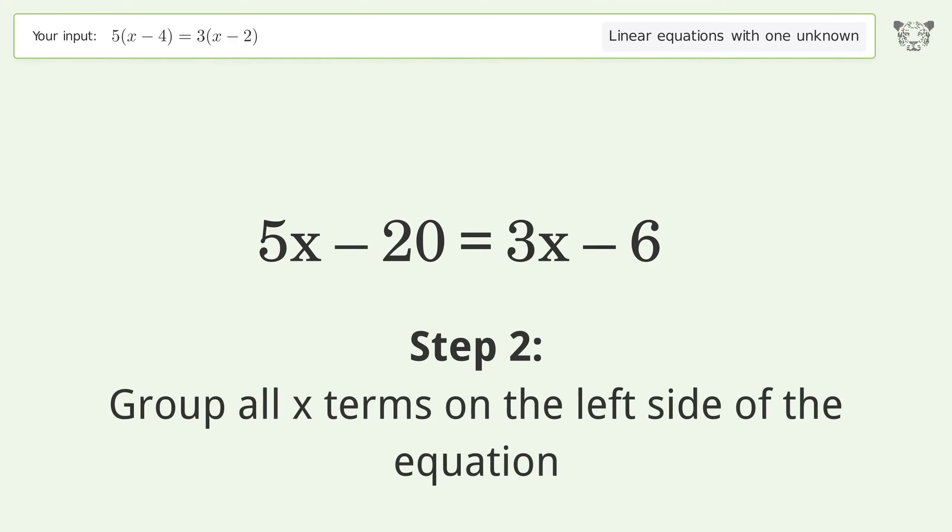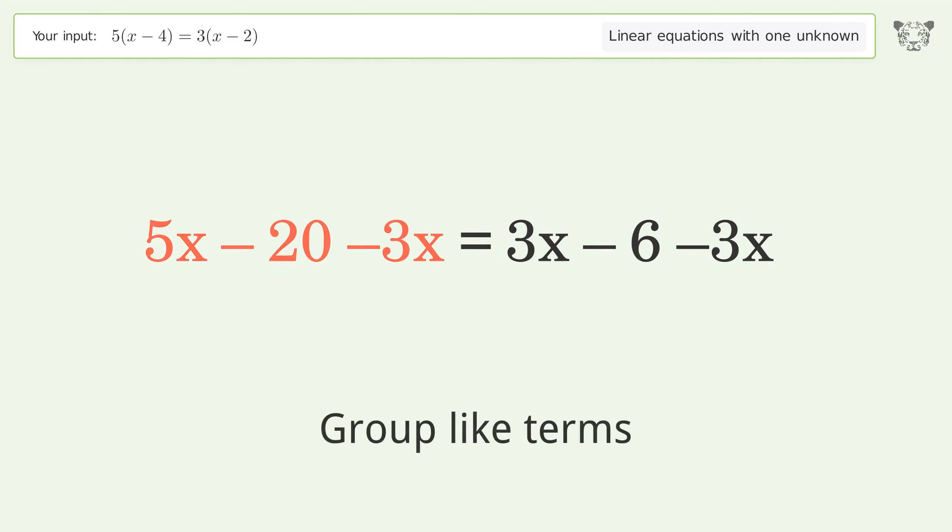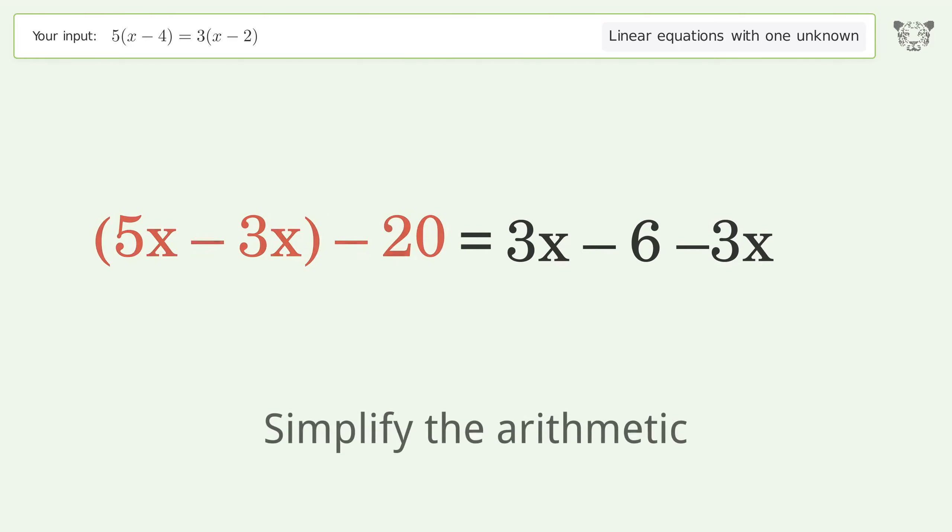Group all x terms on the left side of the equation. Subtract 3x from both sides. Group like terms. Simplify the arithmetic.